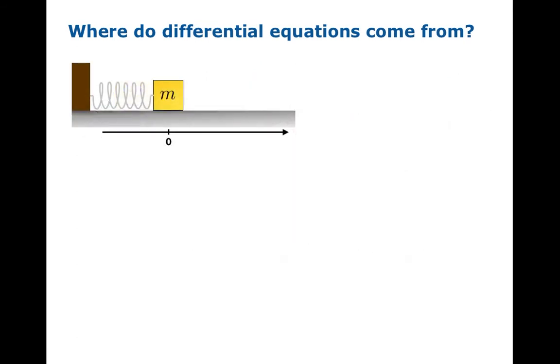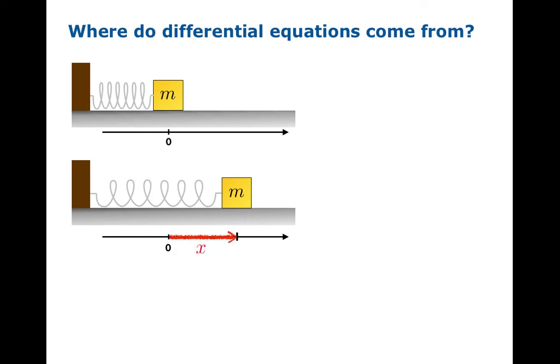Here's another example from physics. If you have a mass on an ideal spring at equilibrium position, and you displace that from equilibrium by a distance x, there's a restoring force trying to work against that, and Hooke's law is just an empirical observation that that force is proportional to the displacement.